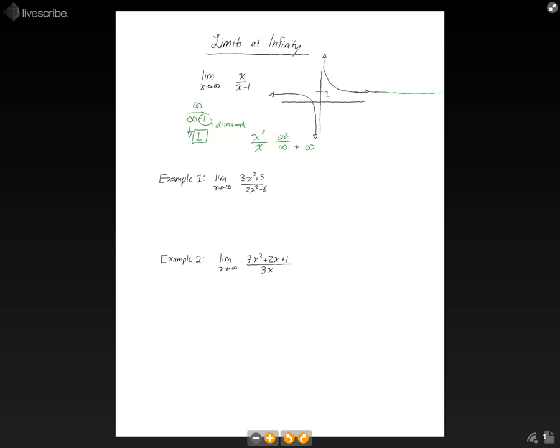Another thing to watch out for is maybe you've got an x over an x squared. When you plug this in, you'll get infinity over infinity squared, which reduces to 1 over infinity, which reduces to 0. So you could say that the limit of that function is 0 as x approaches infinity.